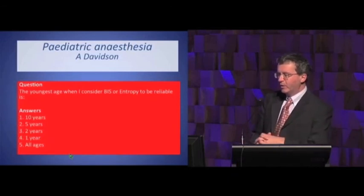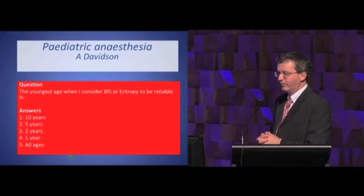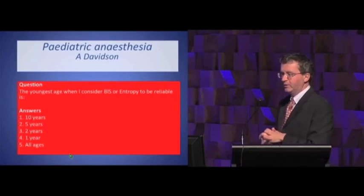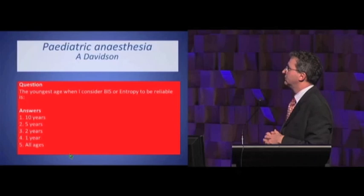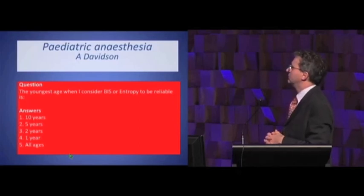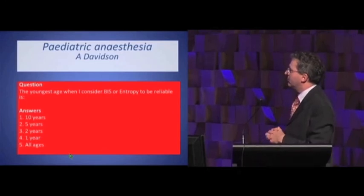Next question: at the youngest age, when do you actually consider BIS or entropy to be reliable? Options are: 10 years, 5 years, 2 years, 1 year, or all ages. Results show a spread across 10 years, 5 years, 2 years, 1 year, and all ages.